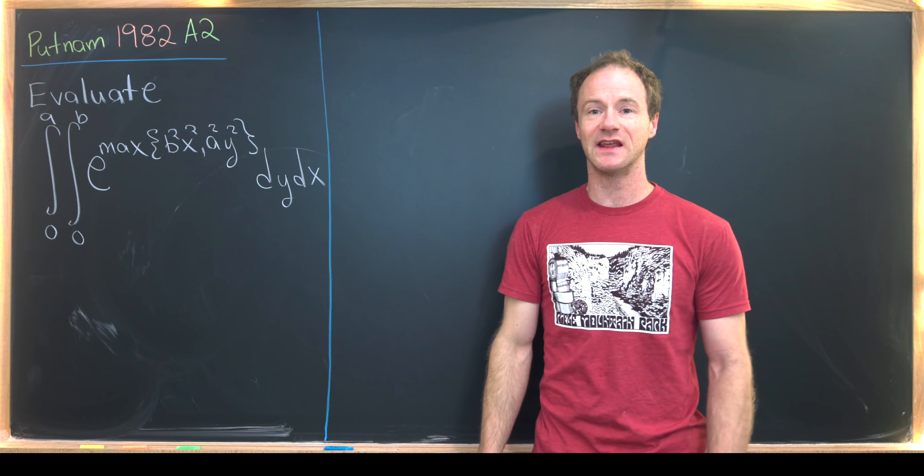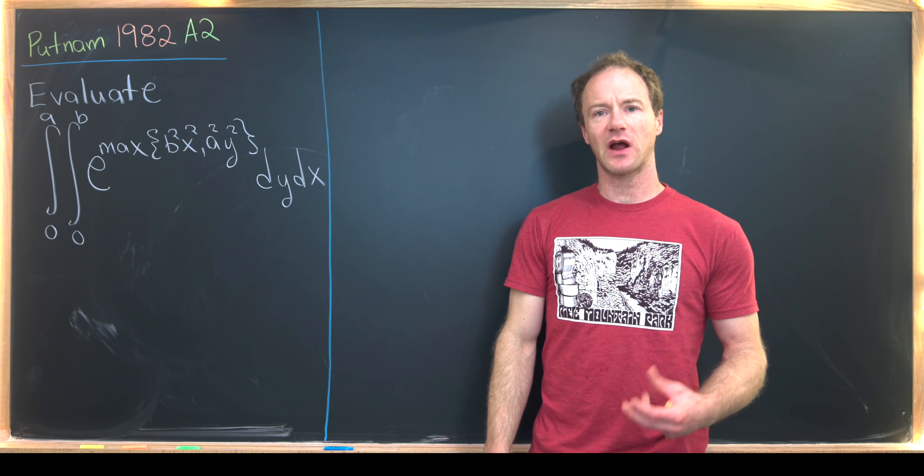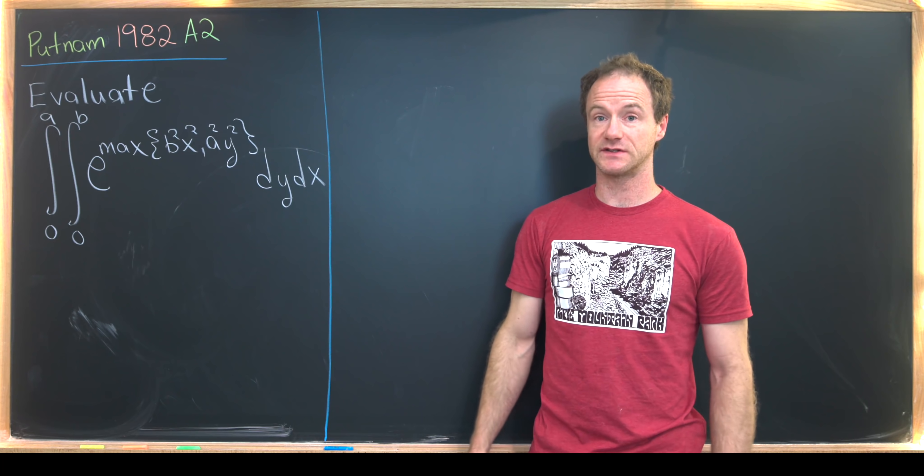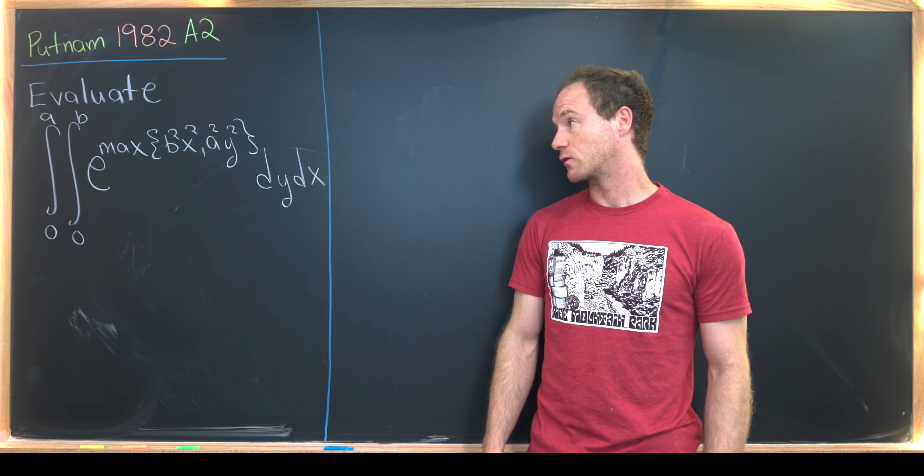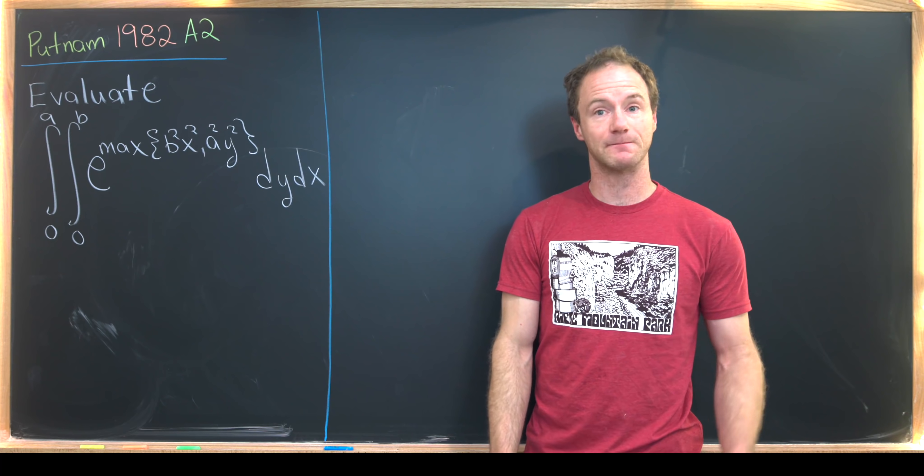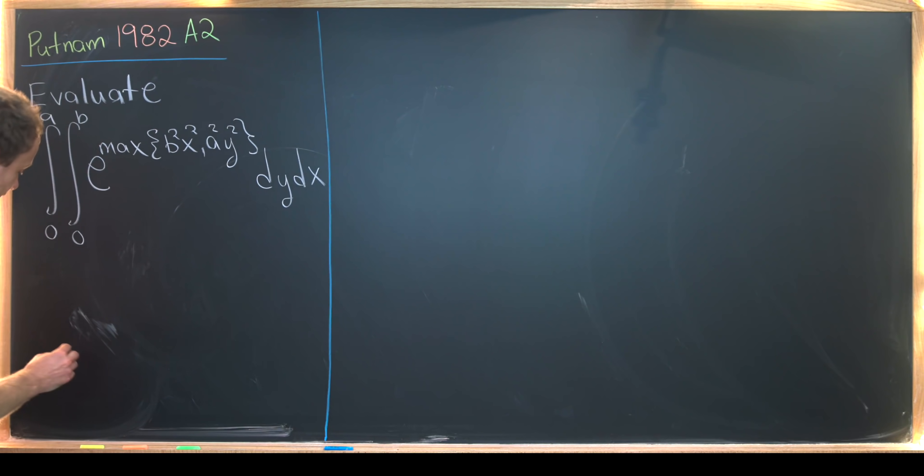So I want to notice that as this stands, it's an iterated integral. Perhaps we want to turn it into a double integral instead of an iterated integral and think about what we can do with that region of integration. So let's see maybe how to do that. I'm going to introduce some notation really quick.